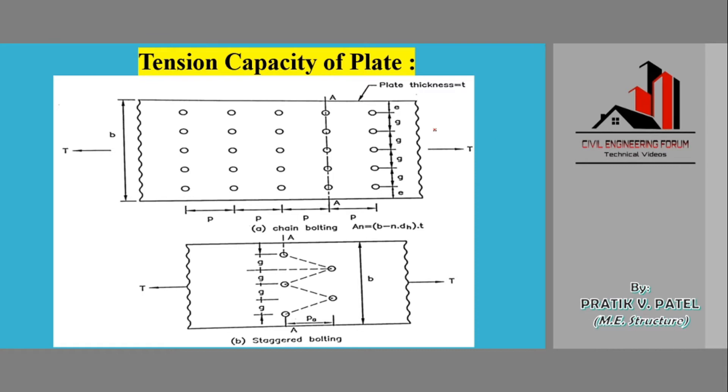Here I have shown a typical plate with chain bolting, which means bolt holes are in the same line. We can see that bolt holes are in the same line like this and a load is applied in this direction. Another figure I have shown is this where the bolts are not in the same line but are arranged in a zigzag pattern.